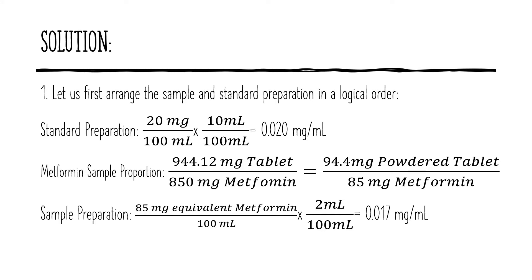Next, it would be helpful if we know the proportion of the sample with its corresponding label claim. Since each tablet on average weighs 944.12 milligrams, this value is equivalent to 850 milligrams. But since only a portion is taken and not 944.12 milligrams, the sample to be used in the analysis is only equivalent to 85 milligrams of metformin.